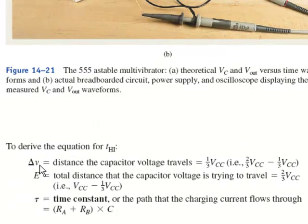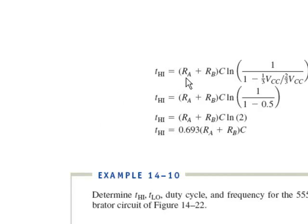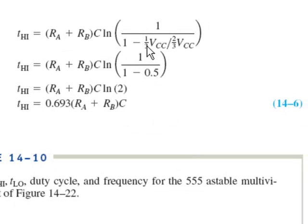Then to drive the equation for T high, the delta V is also 1/3 VCC because it's going from the 2/3 VCC down to the 1/3 VCC while the output is high. The total distance is going to be from the VCC down to the 1/3 VCC. That's the total distance it's trying to travel. So as the capacitor starts at 1/3 VCC and goes up toward VCC, you just subtract these two numbers. And then the time constant, or the path that the charging current flows through, is both resistors. So the final equation is RA plus RB times C times the natural log. And again, it's going to be the 1/3, which is the delta V, and the 2/3, which is the E value. That again turns out to be 0.5. And when you take the natural log, the natural log of 2 is actually that 0.693. So here's the equation for T high.